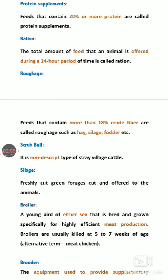Roughage: animal feed is broadly divided into two categories — roughage and concentrate. Feed in which crude fiber percentage is less than 18% is called concentrate, and feed in which crude fiber percentage is more than 18% is called roughage. Concentrates include oil cakes and grains as energy and protein sources, while roughage includes dry and green forms.